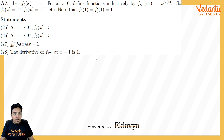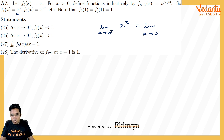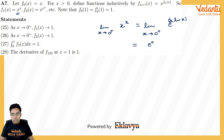Question 7: f₀(x) = x for x > 0, and f_{n+1}(x) = x^{f_n(x)} inductively, so f₂(x) = x^{x^x} etc. Note f₀(1) = 1 and f₀'(1) = 1. Part 25: limit as x → 0+ of f₁(x) = x^x. Writing x^x = e^{x ln x}, and since lim_{x→0+} x ln x = 0, the limit equals e⁰ = 1. This is true.